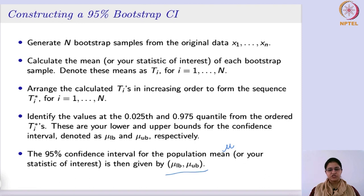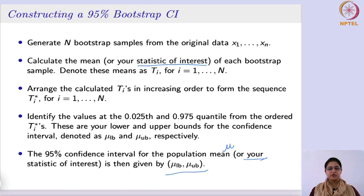You can keep changing the statistic as per your interest — whatever statistic you are considering will appear accordingly. So it is very simple: you have the data set, and here we are not making any assumption on the distribution. We just have a data set, and from that same data set we resample a certain number of times. For each sample we calculate the statistic of interest — suppose the mean. We order those means to find the quantiles, then look at what percentage of points lie between alpha/2 and 1 - alpha/2. These two give the lower and upper bound for your confidence interval.